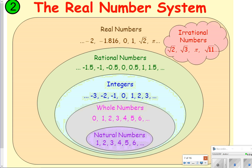Number two is a diagram we're going to draw in our notes — very beneficial for understanding what is an irrational number versus a real number. We start with natural numbers, which is just counting from one upward. Whole numbers include zero. Integers include all natural numbers, all whole numbers, and negatives. Rational numbers are numbers that can be written as fractions, including decimals like negative one-half or positive one-half. Real numbers are all numbers that can be written as numbers. And irrational numbers are numbers that do not repeat and do not terminate.